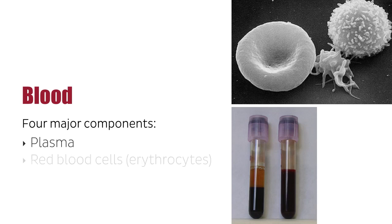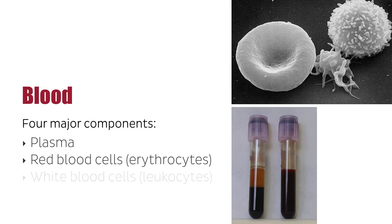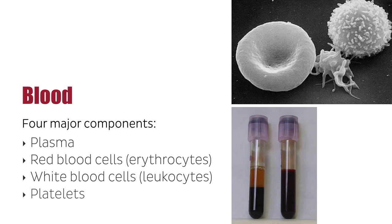Red blood cells, which are also known as erythrocytes, are formed in the bone marrow and function mainly as oxygen carriers. White blood cells, or leukocytes, make up the body's immune system by producing antibodies and helping destroy harmful microorganisms. These cells are also created in the bone marrow. Lastly, platelets are cells that clump together to form blood clots and help protect the body by preventing bleeding.